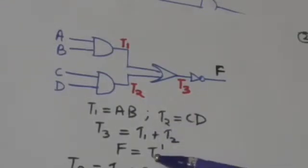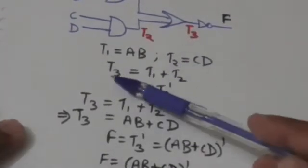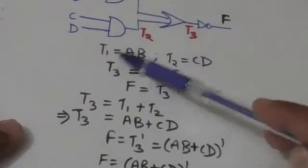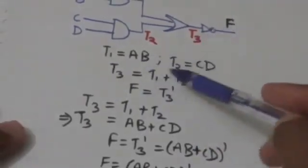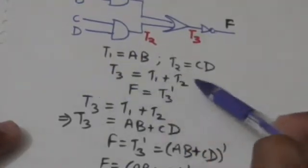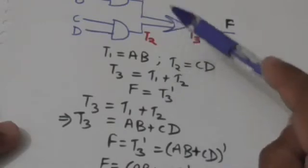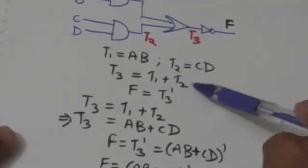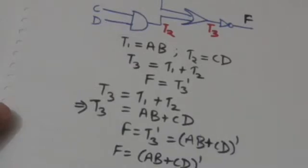Now I need to obtain the boolean function for output variable F in terms of input variables A, B, C, and D. Since F equals the complement of T3, and T3 equals T1 plus T2, I substitute T1 with AB and T2 with CD. So T3 becomes equal to AB plus CD.